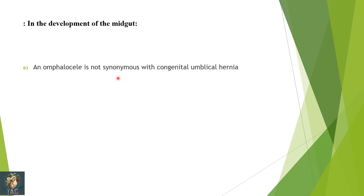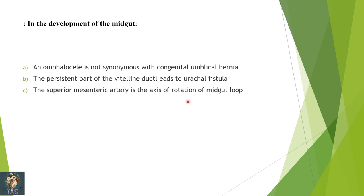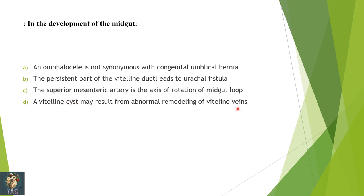Another question from embryology on development of the midgut: omphalocele is synonymous with congenital umbilical hernia; the persistent part of the vitelline duct leads to urachal fistula — this is incorrect, urachal fistula is formed by the allantois; superior mesenteric artery is the axis of rotation of the midgut — this is true; vitelline cyst may result from abnormal remodeling of the vitelline vein — this is not correct. Correct option is C: superior mesenteric artery forms the axis around which the midgut rotates.